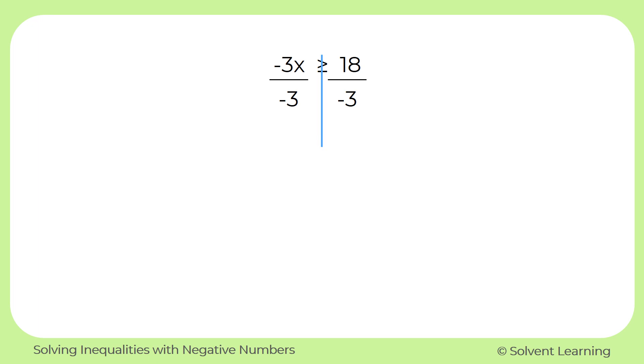So on the left, negative 3 over negative 3 will cancel each other out because that will simplify to just 1 times x, which is the same as x. And on the right side, we have 18 divided by negative 3, which is negative 6.